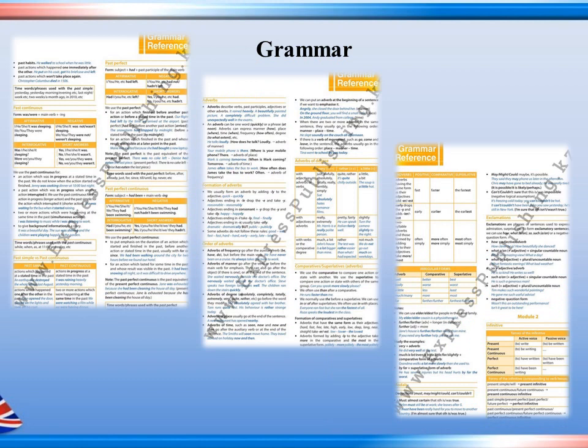Grammar — we have learned past tenses. How do we use past continuous? The auxiliary verb is was/were plus main verb -ing. For example: Jenny was cooking dinner at 10 last night — 'was cooking' is past continuous. Past perfect: subject plus had plus past participle of the main verb. Past perfect continuous: subject plus had been plus main verb -ing.